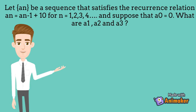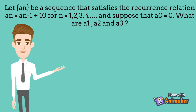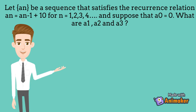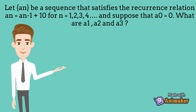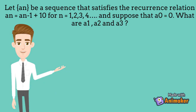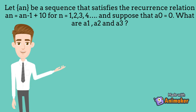Let's see an example. Let an be a sequence that satisfies the recurrence relation an equals to an minus 1 plus 10, for n equals to 1, 2, 3, 4, and so on. Suppose that a0 equals to 0 — what are a1, a2, and a3?